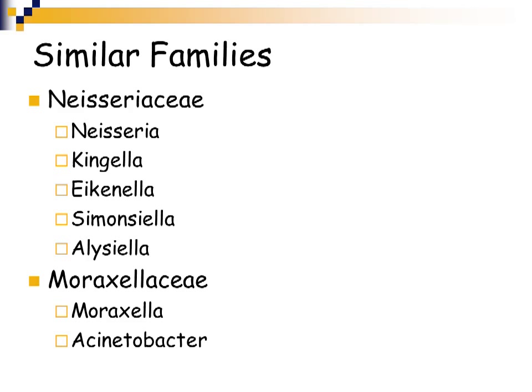This lecture has been broken down into five different parts; this is the first of five. The Gram-negative cocci have two major families: the Neisseraceae and the Moraxellaceae. All of these organisms used to be in one family at one point in time, but they've been broken out into two distinct families, though they share very similar features.